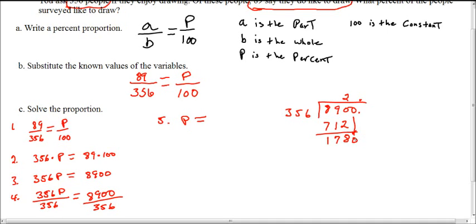So that'll give us 1780 divided by 356. And just to somewhat look at this, 5 times 3 is 15 and this is 17. So let's try 5.